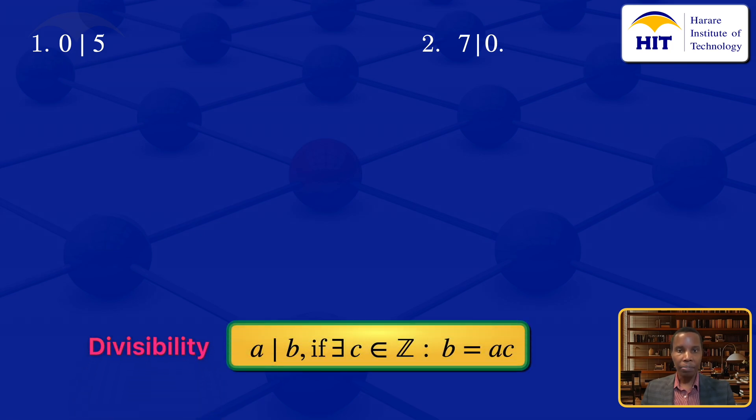We say that A divides B if there exists an integer C such that B equals AC. So in this case, we are saying that 0 divides 5 if there exists an integer C such that 5 equals 0 times C.